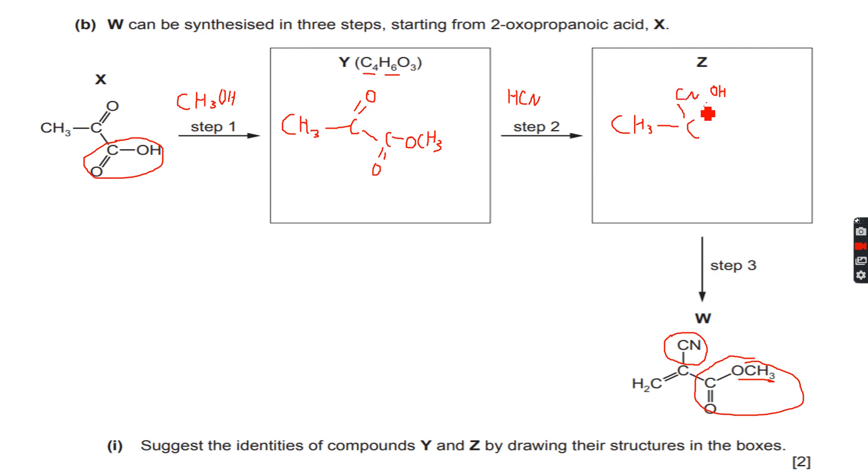This bond remains the same and the ester group will have no change because it does not react with the HCN, so it will remain the same. So now we have compound Z, which has a CN and an OH. Z goes to W, in which we only have the CN, not the OH, and this becomes a double bond—it becomes a carbon-carbon double bond. We will see how that happens later, but for now we have suggested the identities of compounds Y and Z.